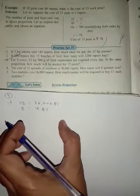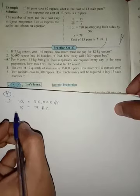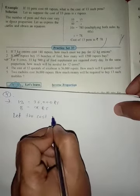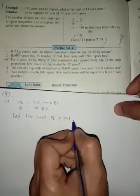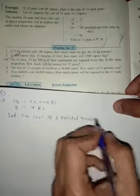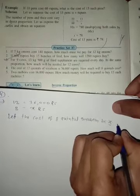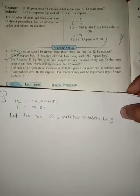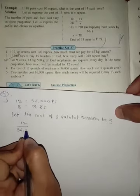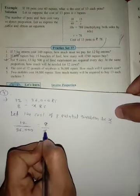Let's solve. Let the cost of 8 quintals soybean be x. Now let's solve this proportion: 12/36,000 equals 8/x.